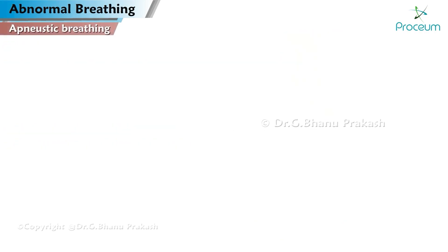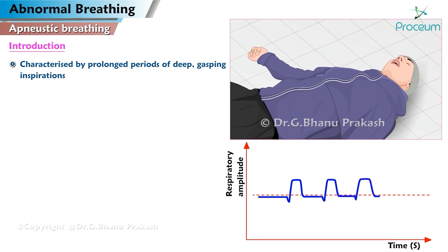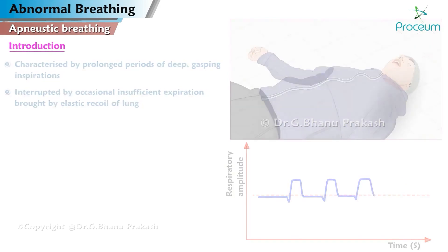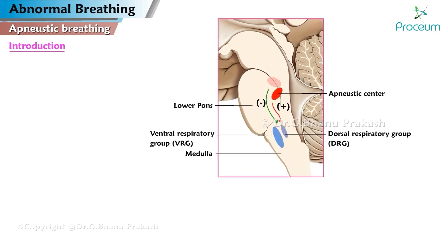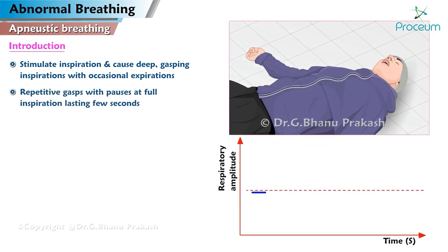Apneistic breathing. Introduction. Characterized by prolonged periods of deep gasping inspirations. Apneistic breathing is located in the lower pons. It acts to stimulate inspiration and can cause deep gasping inspirations with occasional expirations. Apneistic breathing involves repetitive gasps with pauses at full inspiration lasting a few seconds.